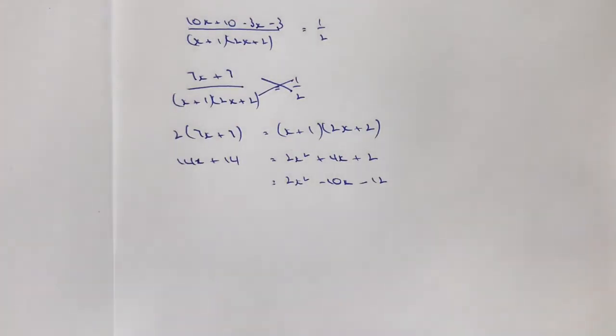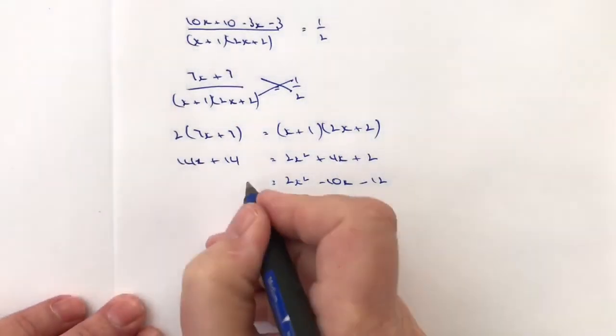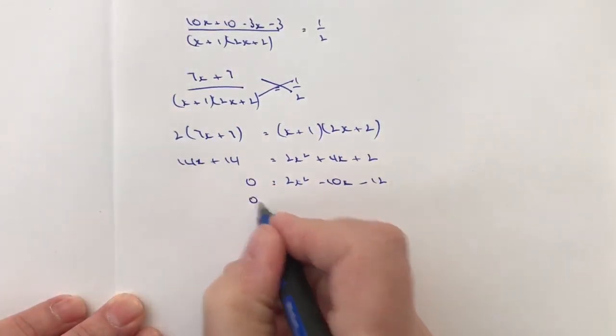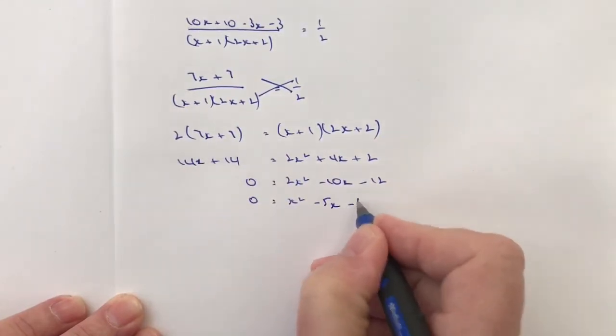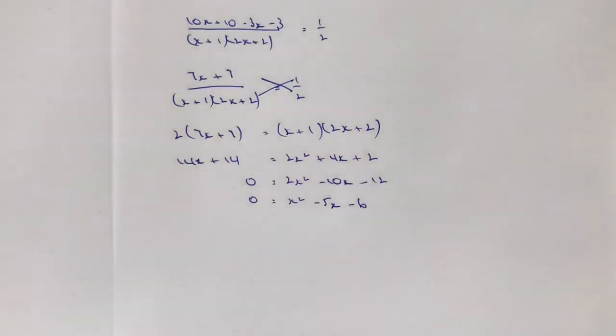Let's make it a little bit simpler now by dividing through by 2. So that's going to give me x squared minus 5x minus 6.